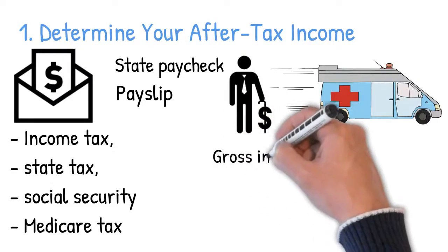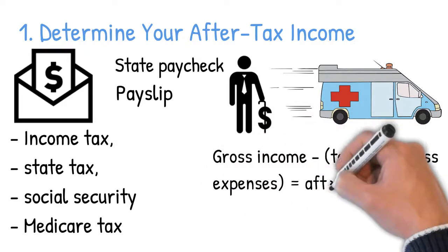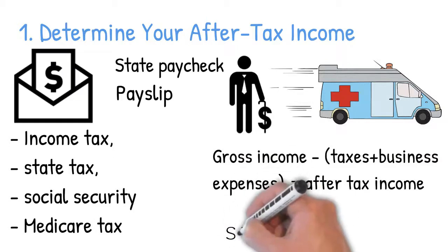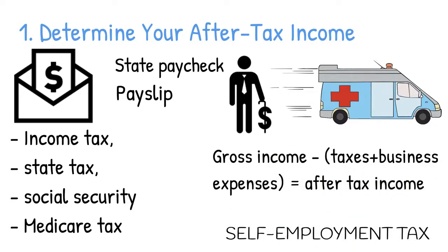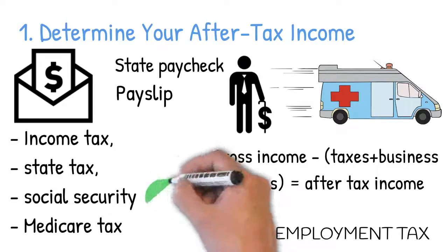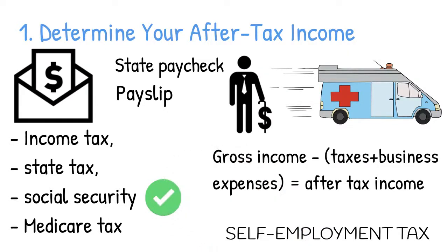If you are self-employed, you just need to deduct your taxes and business expenses from your gross income to get your after-tax income. Remember that being self-employed obliges you to submit the self-employment tax, so you also need to include that deduction when calculating after-tax income. The chances are that you'll pay double what you pay for social security taxes when it comes to self-employment taxes.